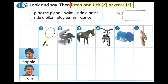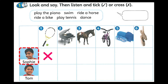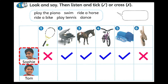Listen and tick or cross. Hello, Sophie. Can I ask you some questions? Yes, you can. Can you play tennis? No, I can't. Can you play the piano? Yes, I can. Can you ride a horse? Yes, I can. And can you ride a bike? Yes, I can. Can you swim? Yes, I can. Can you dance? No, I can't. Thank you, Sophie.